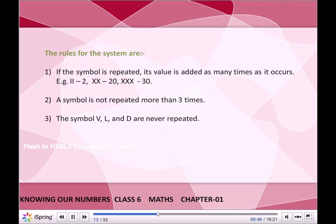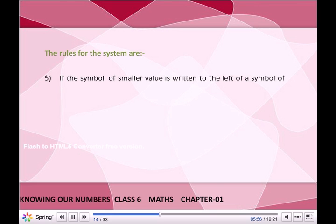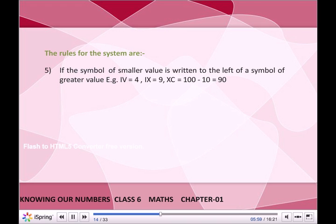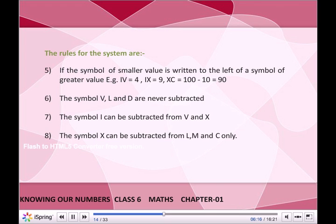If a symbol of greater value is placed to the right, its value is added — for example, LXV = 50 + 10 + 5 = 65. If a symbol of smaller value is written to the left of a symbol of greater value, it is subtracted — for example, XC = 100 − 10 = 90. The symbols V, L, and D are never subtracted. I can be subtracted from V and X; X can be subtracted from L, C, and M only.